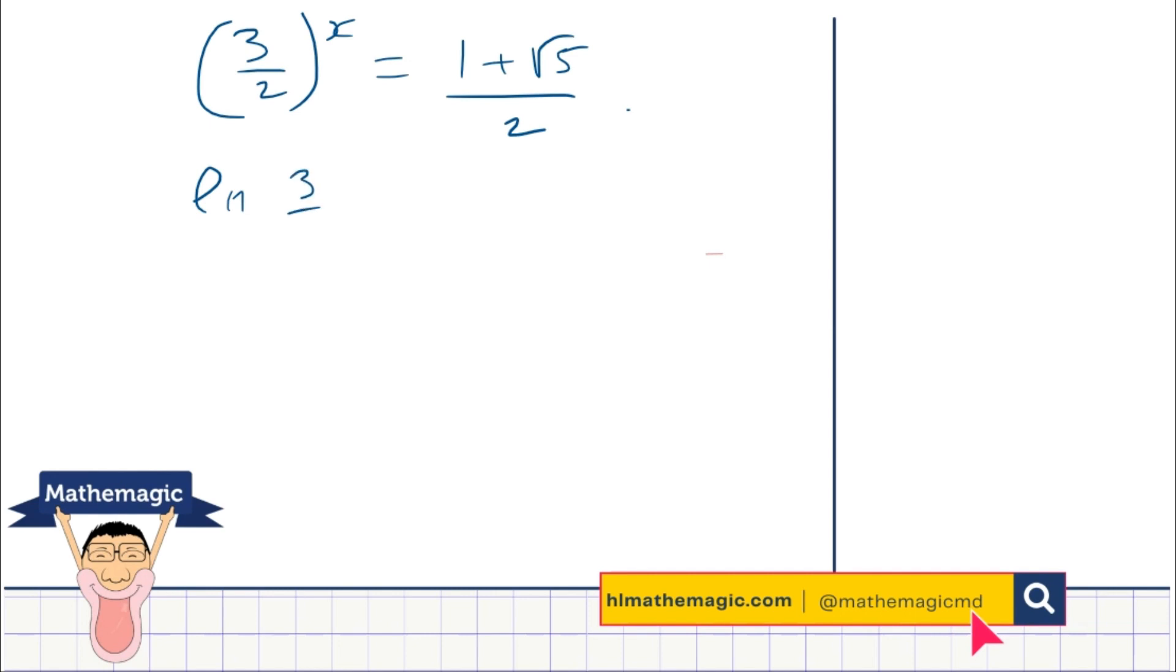So ln of 3 over 2 to the power x is going to be equal to ln of the golden ratio, 1 plus root 5, by the way, this is the golden ratio, over 2, which is phi. Phi is the golden ratio. This is a very important number. It just happens to be in this question.